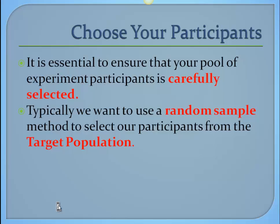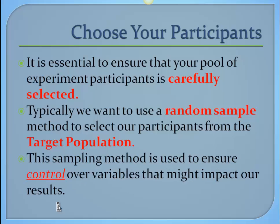Think about the target population — what is the population we're studying. Typically, population doesn't mean all the people in the world; it simply means the people we are trying to make conclusions about. That could be just freshmen at a particular high school, or fifth graders in Dane County. The sampling method we use will determine how much control we have over variables that could change the dependent variable. We want the independent variable to be the only thing that affects the DV.